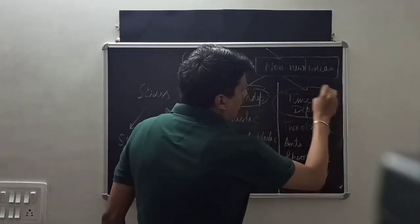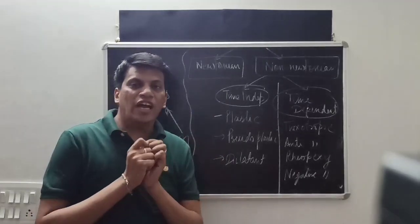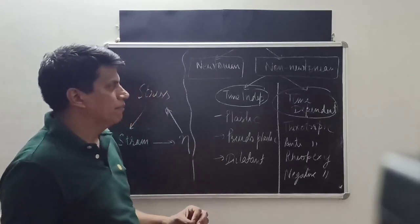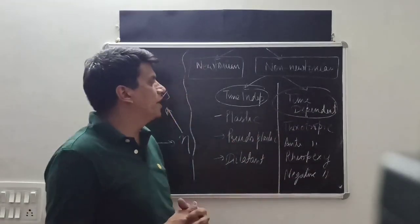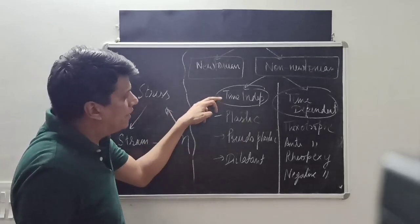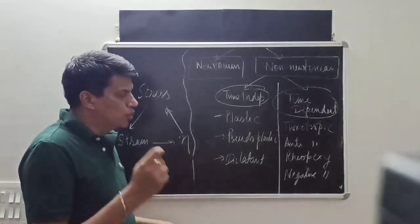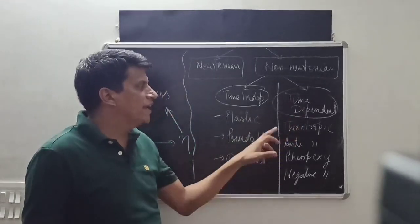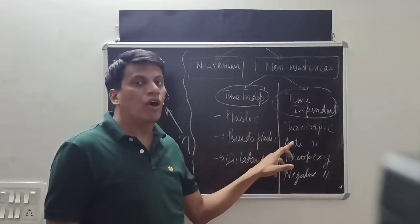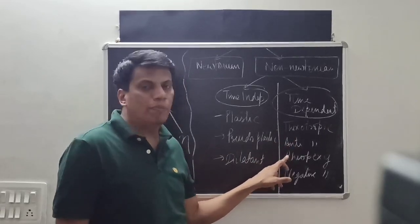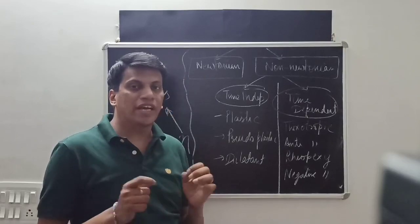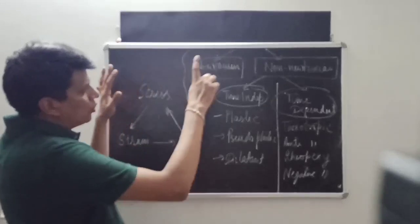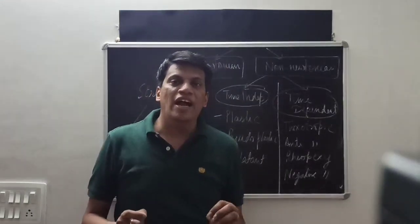Non-Newtonian materials are further classified into two types: time-independent and time-dependent. Time-independent materials have properties not dependent on time. Time-dependent materials have properties dependent on time. Time-independent types include thixotropic, anti-thixotropic or negative thixotropic, rheopexy, and negative rheopexy systems.